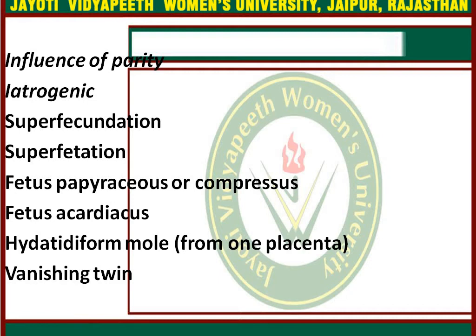Iatrogenic causes — drugs used for induction of ovulation — are now a more common cause of twin pregnancy, with clomiphene citrate being the most common drug used. Superfecundation is the fertilization of two different ova released in the same cycle by separate acts of coitus within a short period. Superfetation is the fertilization of two ova released in different menstrual cycles, with nidation and development of one fetus over another, theoretically possible until the decidual space is obliterated at 12 weeks.